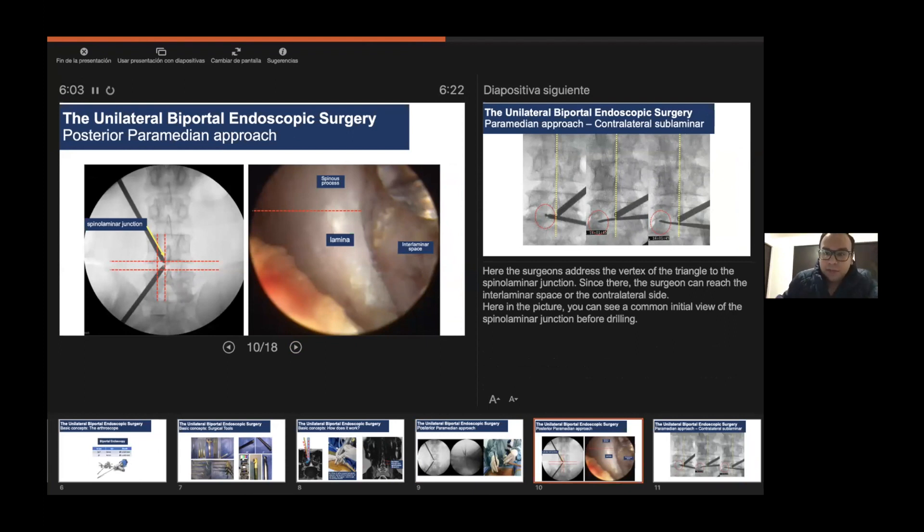However, most of the discectomy and central subarticular stenosis can be treated by this approach, the paramedian approach. Here the surgeon addresses with the vertex angle of the triangle the spinolaminar junction, since there the surgeons can reach the interlaminar space, the ipsilateral subarticular zone, and you can reach the contralateral side. This is a picture taken immediately after initiating the approach where you can see the spinous process, the base of the spinous process, and the lamino-spinous process junction.